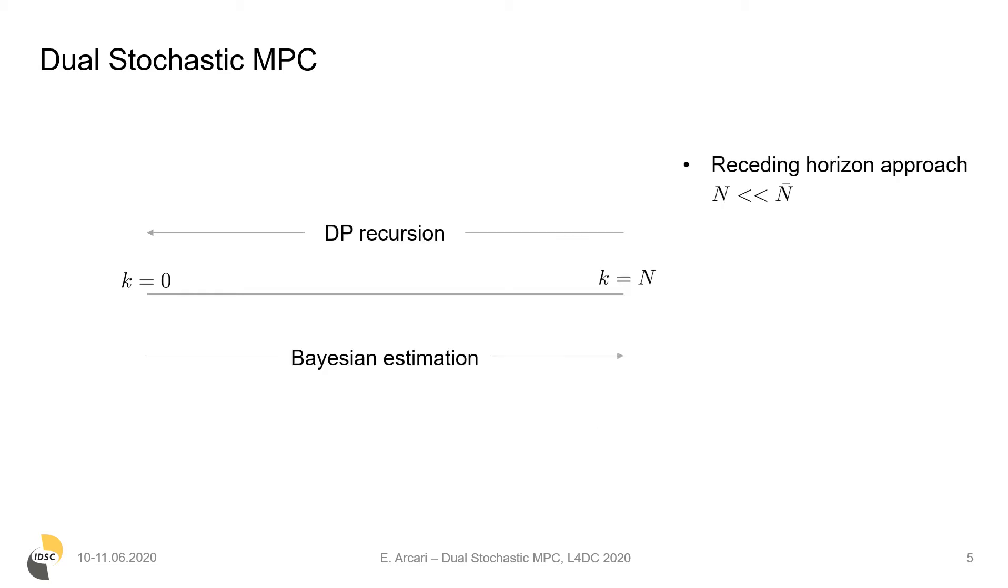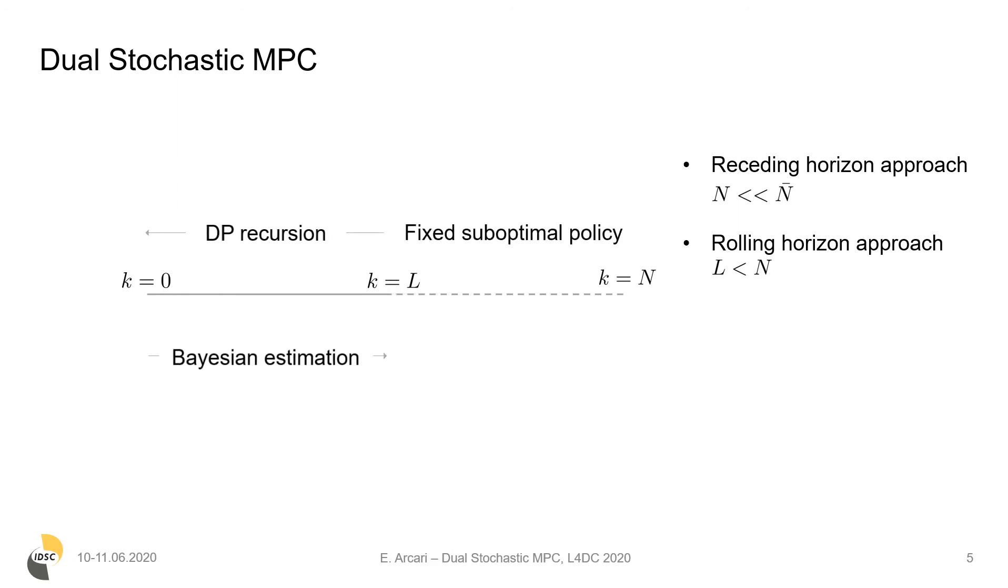The problem is solved over a shorter horizon N in a receding horizon fashion, and by making use of a rolling horizon approach, which means that DP is applied only over L-steps, and for the remaining part a suboptimal policy is fixed. This approach, however, still requires to carry out the DP recursion.